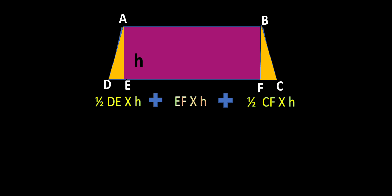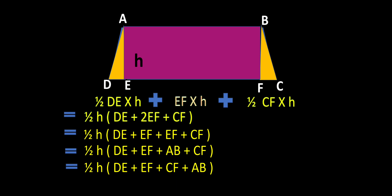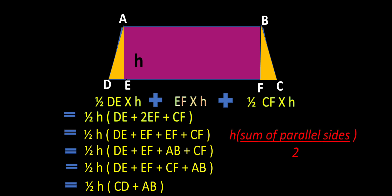Now let us find the sum of all three parts to get the area of the total trapezium. When we take half H as common, we are getting DE plus 2EF plus EF. Now 2EF can be split as EF plus EF. In the next step, EF and AB are the same because in the rectangle opposite sides are equal. So DE plus EF plus AB, and in place of EF we can write AB. Then EF plus EF equals CD, so the area of this trapezium equals H into the sum of the parallel sides upon 2.